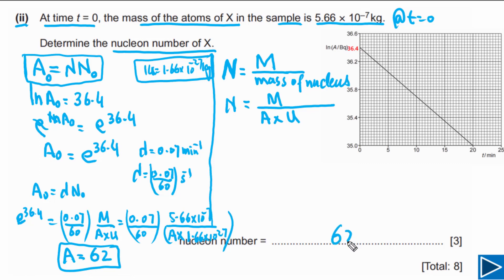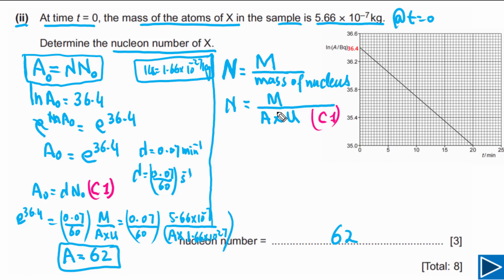This question also has three marks. The first mark is for writing A₀ = λN₀. The second mark is for writing N = M / (A × u). The third mark is the answer mark for obtaining the nucleon number of 62. That covers everything you need to understand about this question.